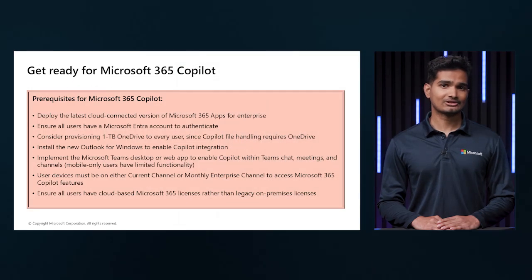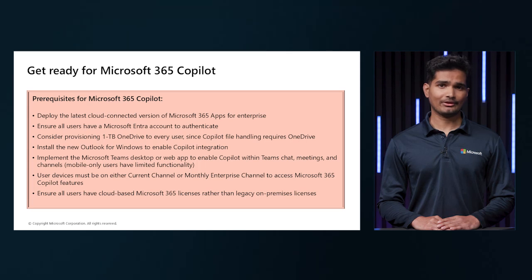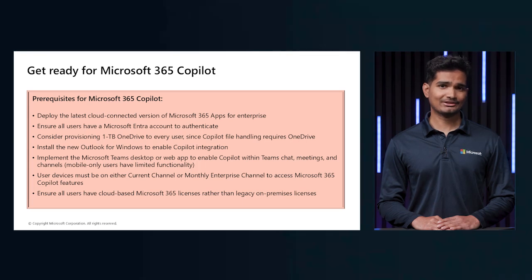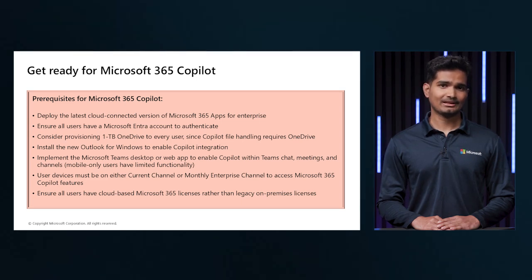Some prerequisites to get started: you have deployed the latest cloud-connected version of Microsoft 365 apps for enterprise; you have all users able to work with a Microsoft Entra account to authenticate themselves; ensure all users have cloud-based Microsoft 365 licenses; and finally, user devices must be on either the current channel or monthly enterprise channel to access Microsoft 365 Copilot features.